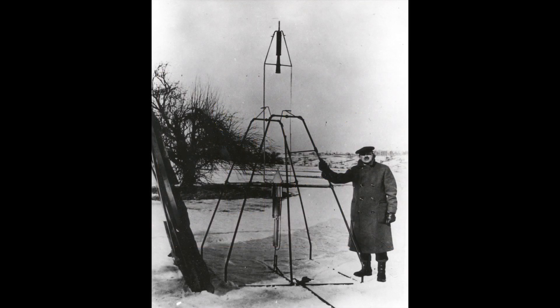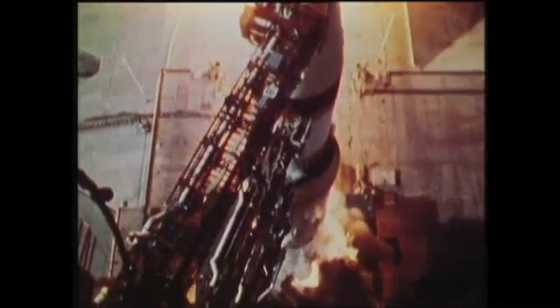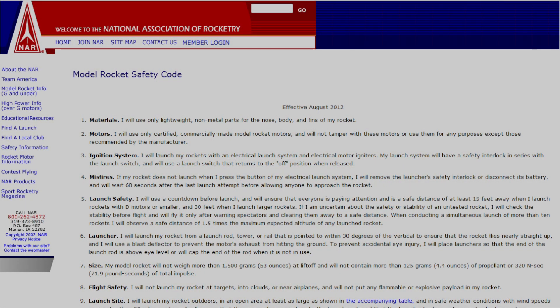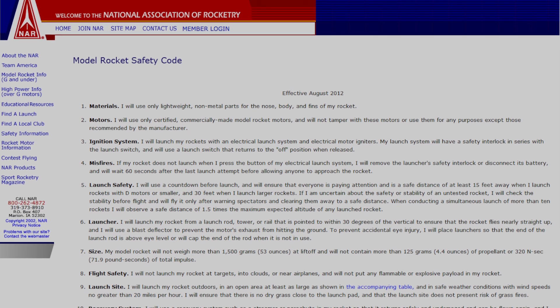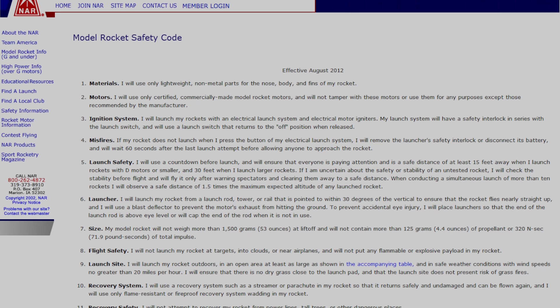An important part of being a model rocketeer or an aerospace engineer is safety. Whether we are building rockets to fly 50 feet in the air or all the way to the moon, the National Association of Rocketry has produced a model rocket safety code that contains rules that every model rocketeer should follow to have safe, fun flights.